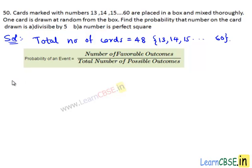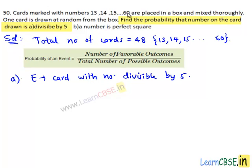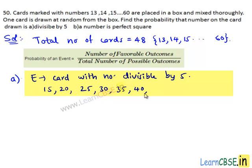Let us see part A. We need to find the probability that the number on the card is divisible by 5. Let E be the event of getting a card with a number divisible by 5. From 13 to 60, the numbers which are divisible by 5 are 15, 20, 25, 30, 35, 40, 45, 50, 55, and 60.